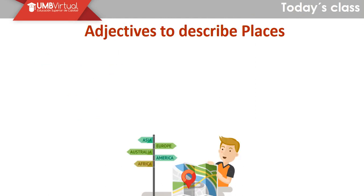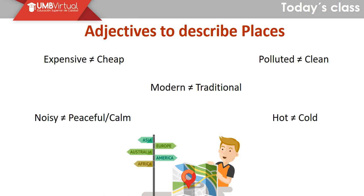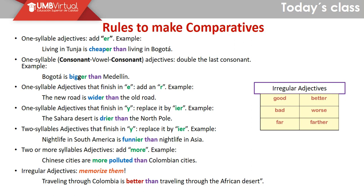Now we are going to check adjectives to describe places. Vamos a ver unos adjetivos que nos sirven para describir lugares. Son estos que ven en pantalla: expensive (caro), cheap (barato), polluted (contaminado), clean (limpio), modern (moderno), traditional (tradicional), noisy (ruidoso), peaceful (silencioso/pacífico), calm (silencioso), hot (caliente), y cold (frío). Ahora vamos a continuar con unas reglas sobre comparativos, un tema que ustedes ya habían estudiado anteriormente.